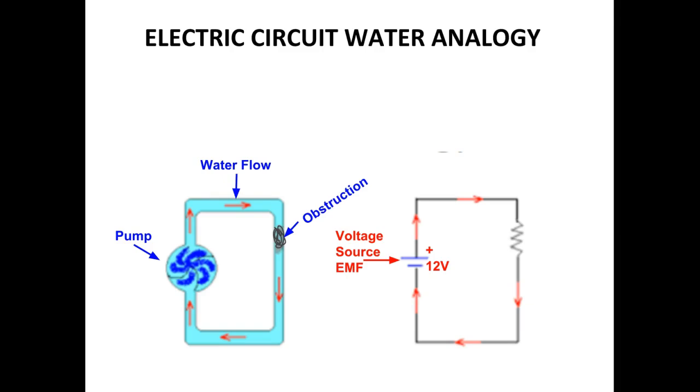What in our electrical circuit best compares to the water? That would be current. The current is the flow of electrons that goes through the circuit.